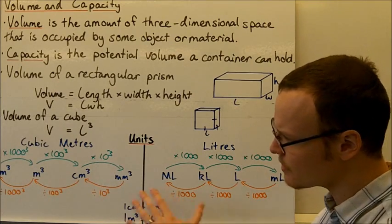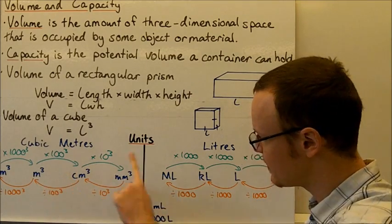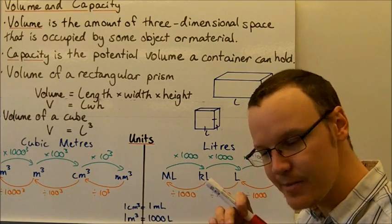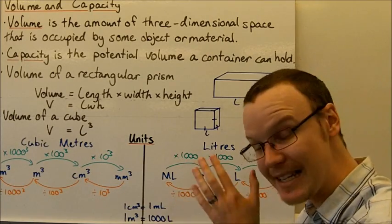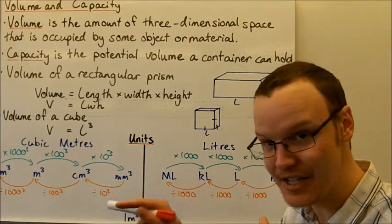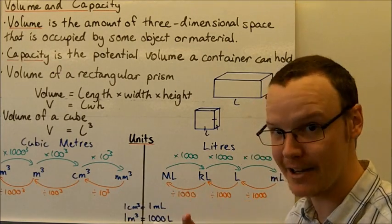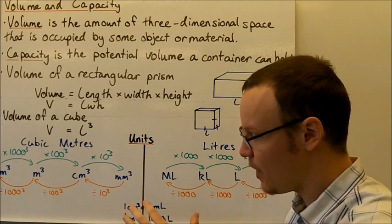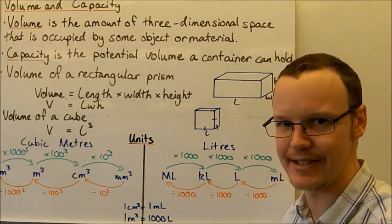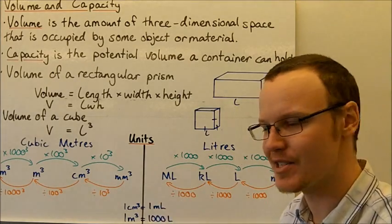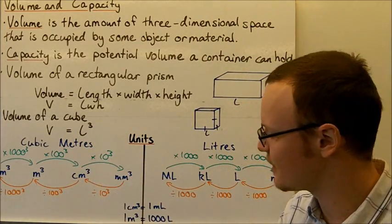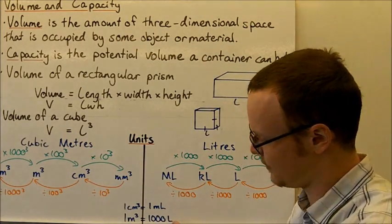There are a couple of key conversions between cubic metres and litres. One cubic centimetre — which is one centimetre by one centimetre by one centimetre — is exactly the same as one millilitre. They are the same amount. However, one cubic metre is equivalent to one thousand litres. So one cubic metre — one metre by one metre by one metre tall — can hold one thousand litres, which is about 500 milk bottles.